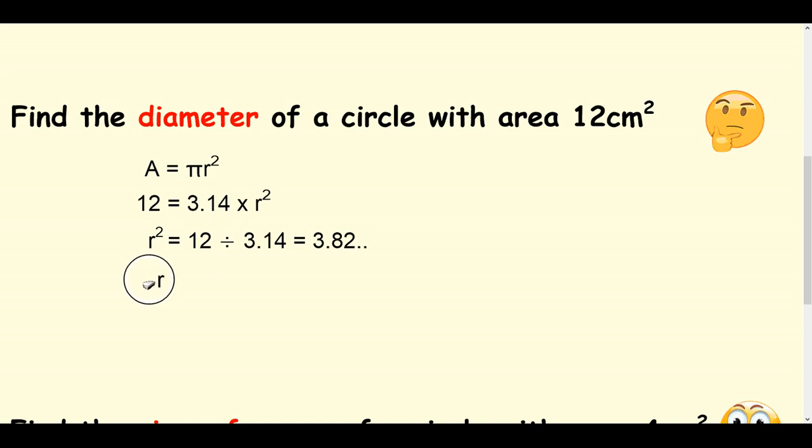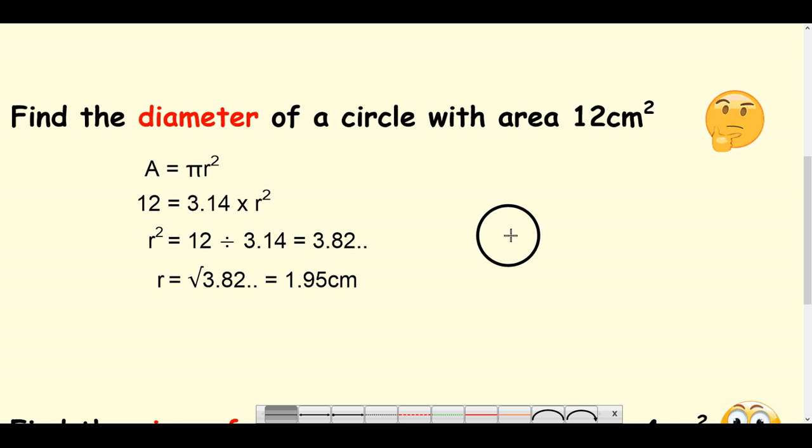Again, to find out r on its own, square root your answer. Undo r squared by square rooting, and you get 1.95 centimeters. Now that you've got the radius of a circle, if we understand what a radius is, a radius is a line from the center point to the outside. That would be that. To get all the way across, which will give you the diameter, you just need to double your answer. So you get the diameter by doubling 1.95, which is 3.9 centimeters.